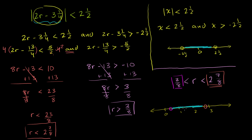Let's verify. r=1 should be valid: 2×1 minus 3¼ is 2 minus 3¼, which is negative 1¼. The absolute value is 1¼, which is indeed less than 2½ — it works. Now r=0 should not work: 2×0 minus 3¼ gives absolute value of 3¼, which is greater than 2½ — so it correctly fails.